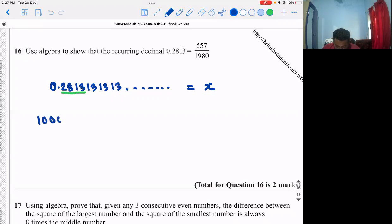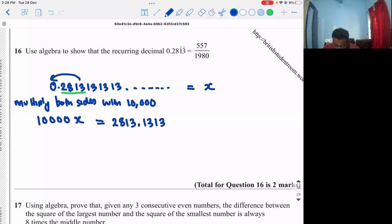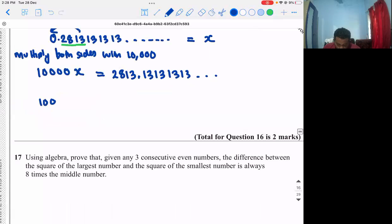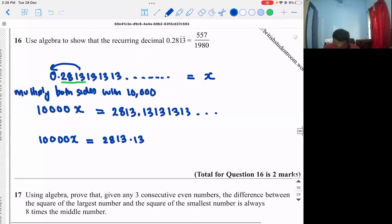Multiply both sides with 10,000. So 10,000x equals what? Since I'm multiplying by 10,000, this many decimal places becomes a whole number. So 2813.131313, and it goes on like that. We can write it in recurring form: 10,000x equals 2813.13. We can put a dot here.